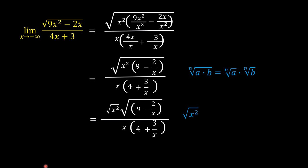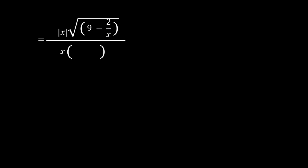Now in algebra, we learn that the square root of x squared can be written as the absolute value of x. The absolute value of x equals positive x if x is greater than or equal to 0, and equals negative x if x is less than 0. We can now replace the square root of x squared by the absolute value of x, giving us the absolute value of x times the square root of the quantity 9 minus 2 over x, divided by x times the quantity 4 plus 3 over x.